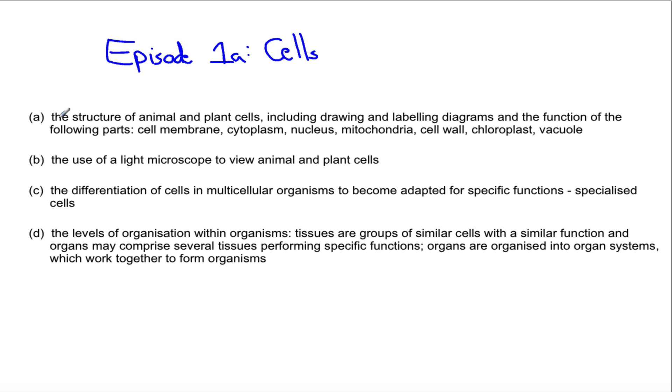So we'll be looking at today the structure of animal and plant cells, how we use a light microscope and how to prepare slides for their use, how the basic structure of an animal and plant cell can be differentiated for their specific job or function, so specialized cells, and then looking at the levels of organization, just looking at one example there with the circulatory system.